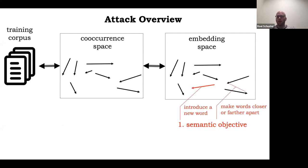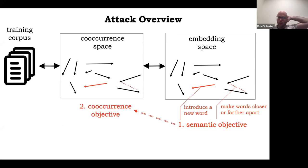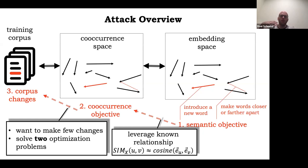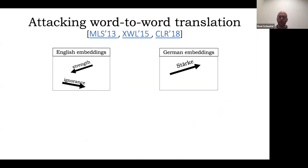The attack has three stages. First, the attacker defines what they want to do in the embedding space — introduce a new word, or make two words closer together or further apart. Second, the attacker derives what they want to happen in the co-occurrence space, using our demonstrated relationship between embedding distances and distances in co-occurrence statistics. Third, from this co-occurrence objective they derive what changes to make to the corpus, optimizing for a small and stealthy set of changes.